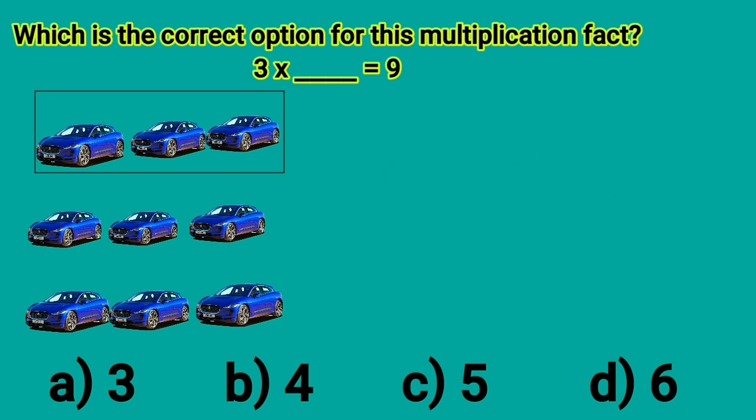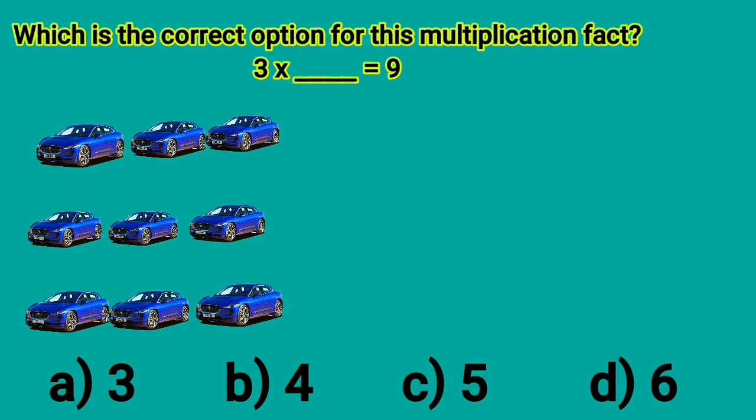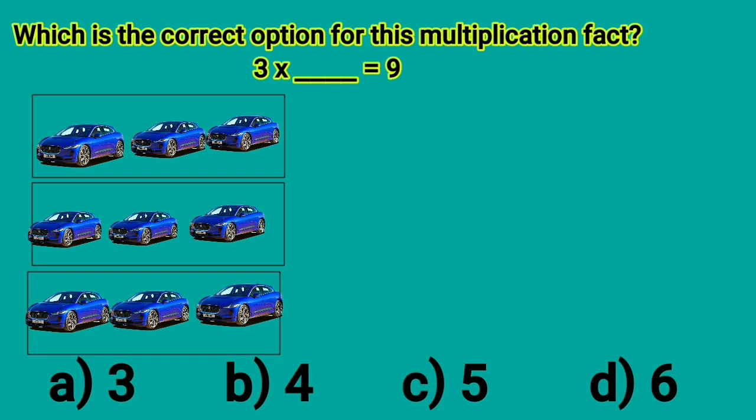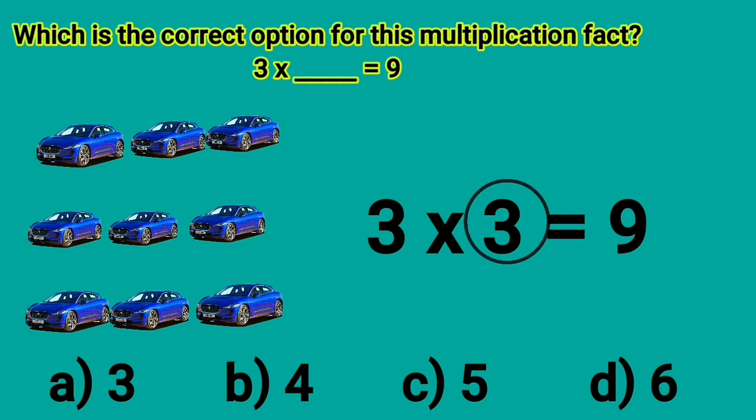Now, 2 groups of 3 is equal to 2 times 3, is equal to 2 multiplied by 3 is equal to 6. Now, 3 groups of 3 means 3 times 3 and we write it as 3 multiplied by 3 is equal to 9. So, 3 is the correct option for this multiplication fact and option A is the correct option for this.